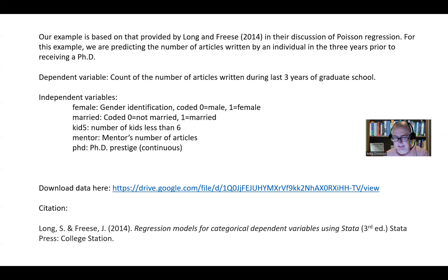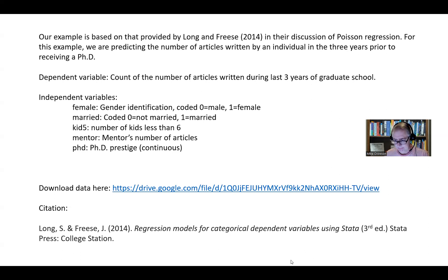The dependent variable in that example was essentially a count outcome — a count of the number of articles written during the last three years of graduate school. The independent variables included gender identification, called female, coded zero for male and one for female. The married variable is an indicator of whether an individual was married or non-married, coded zero for not married and one for married. Kid five refers to the number of kids less than six that a person had.